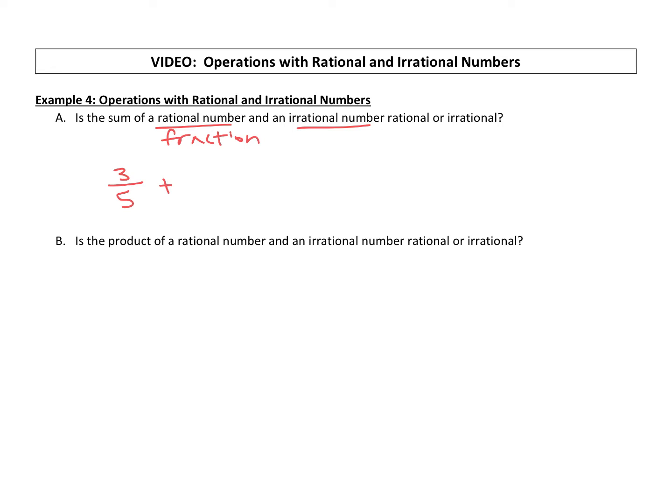What if we add an irrational number? Well, we know an irrational number pi, 3.1415, continues on forever. Would the sum of these be rational or irrational? If we added those together, would we have a fraction answer or a non-fraction answer?